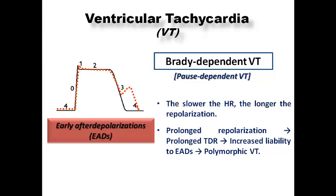Brady-dependent or pause-dependent VT relates to the fact that the slower the heart rate, the longer the repolarization. With bradycardia, liability to EAD increases — similar to the long QT mechanism — increasing the risk of polymorphic VT, VF, and sudden cardiac death. Bradyarrhythmias such as advanced AV block Mobitz type 2, third-degree block, or escape rhythms may result in VT. In this case the patient needs pacing by temporary pacemaker, which can abolish the VT — not anti-arrhythmic medication.